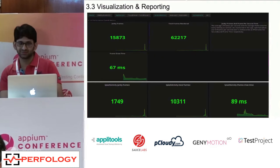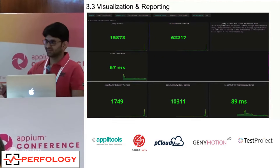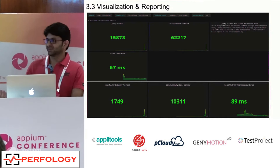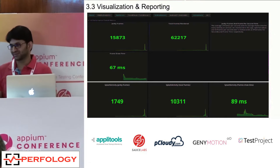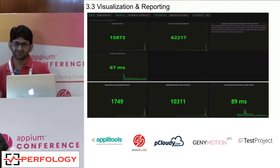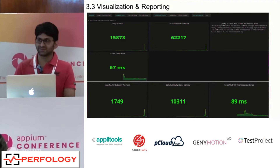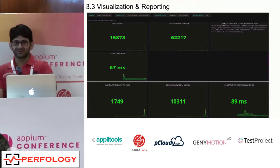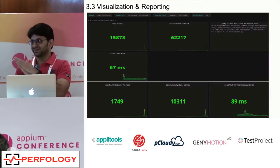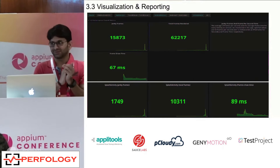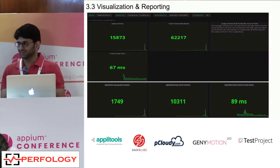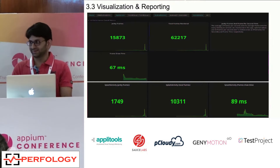All the metrics — memory, CPU, janky frames — are interrelated. If frames are not rendered properly, it causes higher CPU processing. If CPU processes more, battery consumption will be high. So they're all internally connected. If we find an issue, it's not necessarily caused by janky frames alone. We need to backtrack and check the CPU level, memory level, activity lifecycle performance, and onCreate time at that moment to understand where the issue is injecting itself into our code.